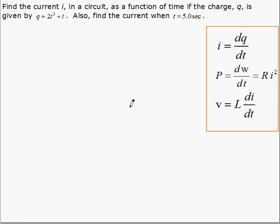In this example of electrical applications of derivative, we're asked to find the current i in a circuit as a function of time if the charge q is given by this equation. Also, we want to know the current when t equals 5.